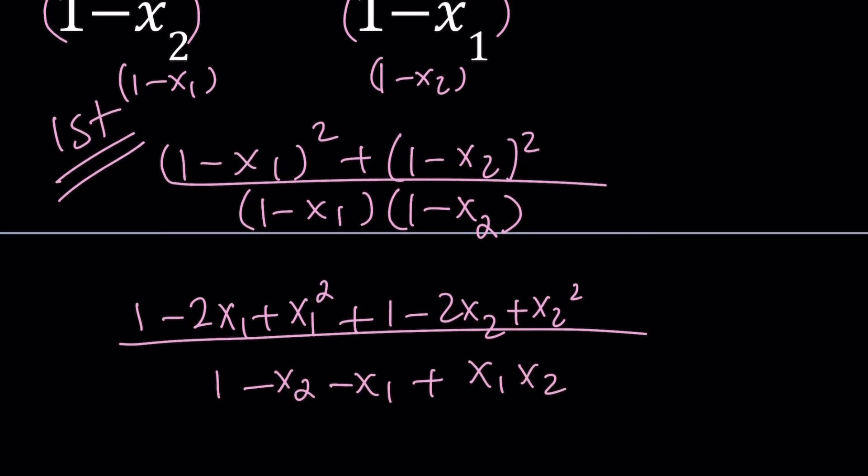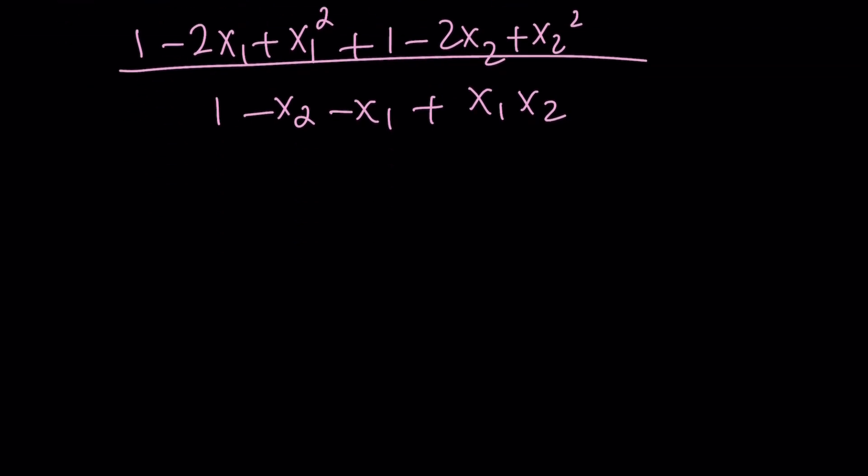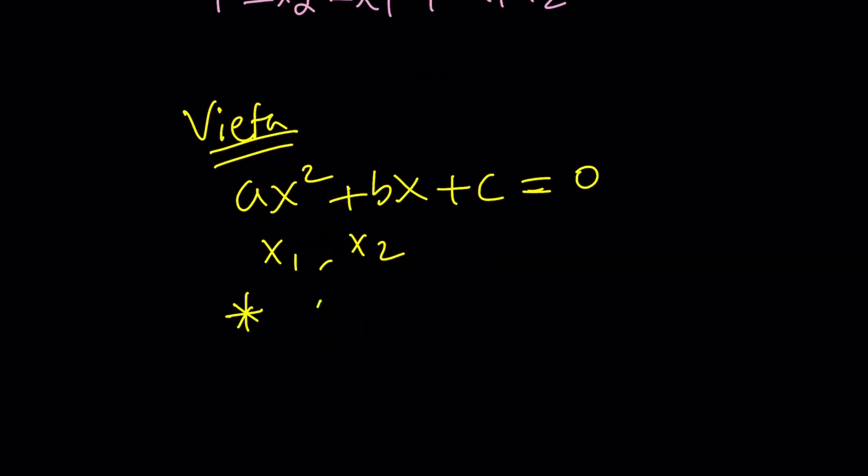So Vieta's formulas are basic, and I also made a video. You can go ahead and check that out as well. But Vieta's formulas basically gives us relationships between the roots and the coefficients. So if you have a quadratic equation like this, and suppose x sub 1 and x sub 2 are the roots, then we can safely say that x sub 1 plus x sub 2 is negative b over a, and x sub 1 times x sub 2 is c over a.